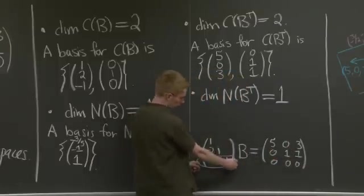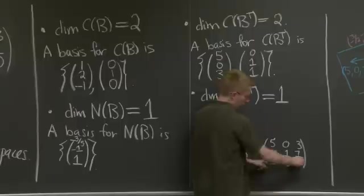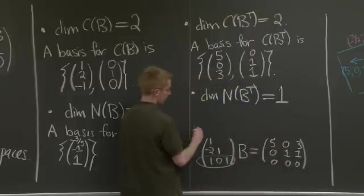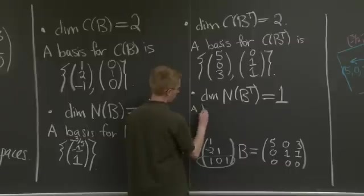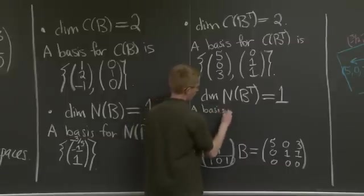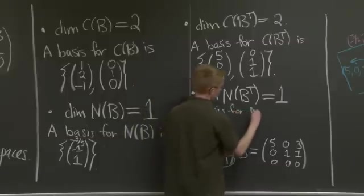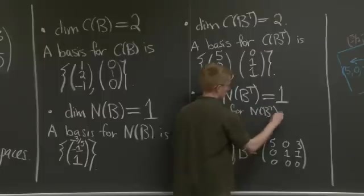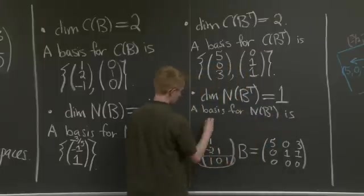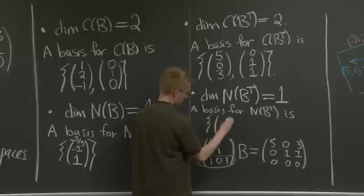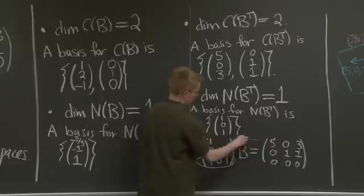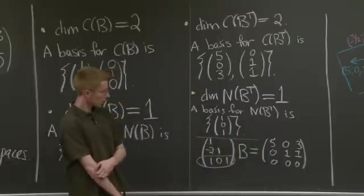The third row corresponds to the free row here. And when I multiply this by B, I just get 0s. So this is in the left null space. So a basis for this left null space is, let's see if I can fit it here, just this 1, 0, 1.